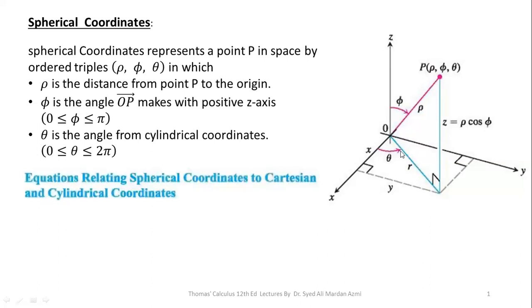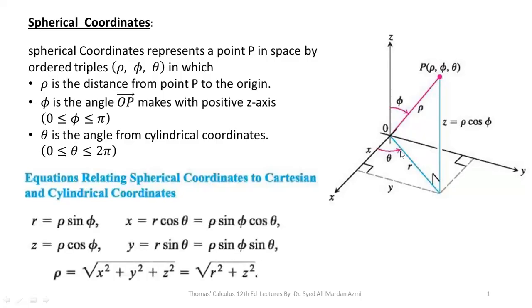Now after this brief introduction, these are the transformation equations and in spherical coordinates our small differential volume element will be written as ρ² sin φ dρ dφ dθ.